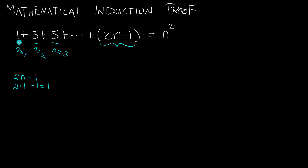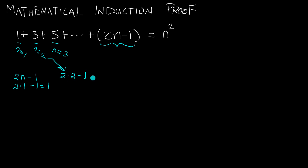So we have 2 times 1 minus 1, and that equals 1 — that's how we get 1 for our n equals 1 term. Then for the n equals 2 term, we have 2 times n minus 1, but this time n is 2, and 2 times 2 minus 1 equals 3.